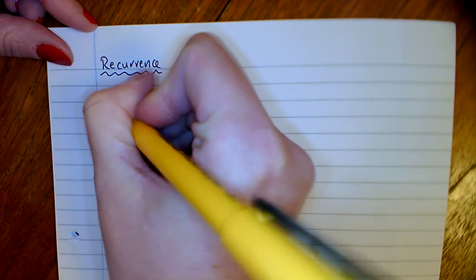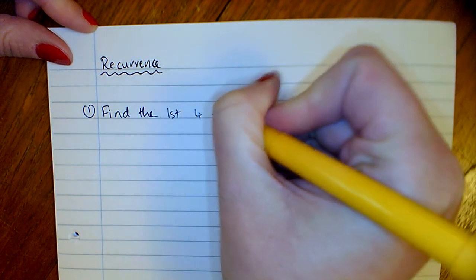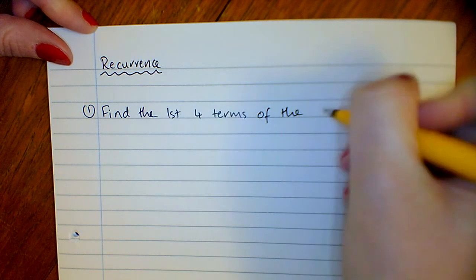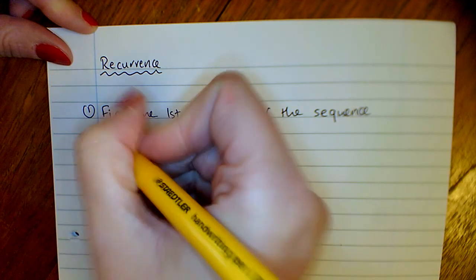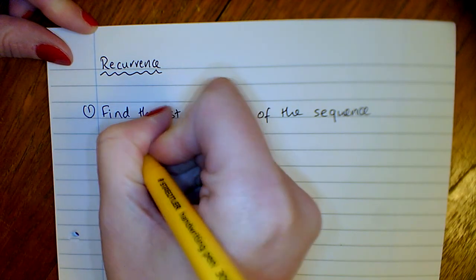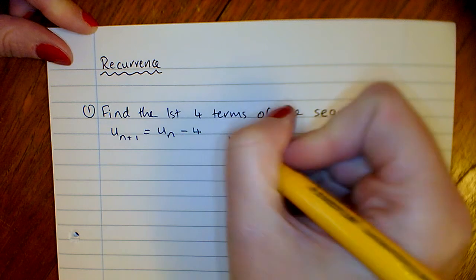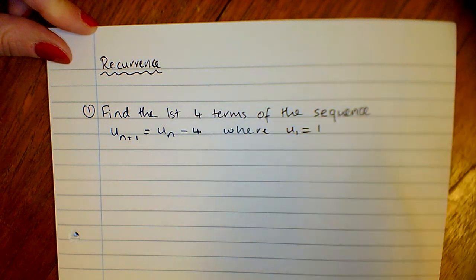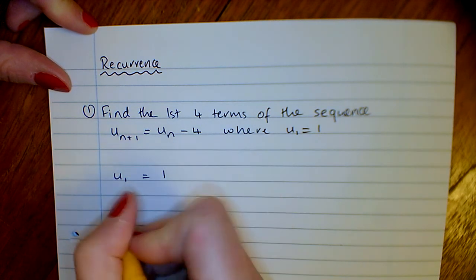So our first one, find the first four terms of the sequence un+1 equals un minus 4, where u1 equals 1. So we've already got our first term, u1 is 1.